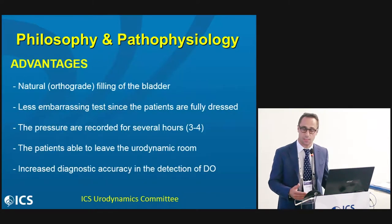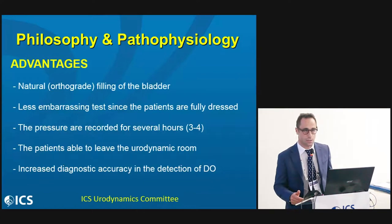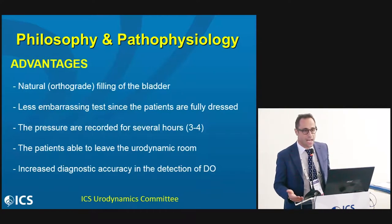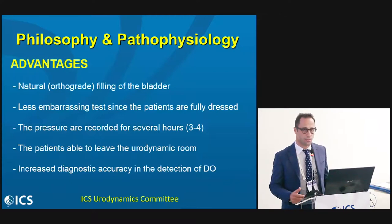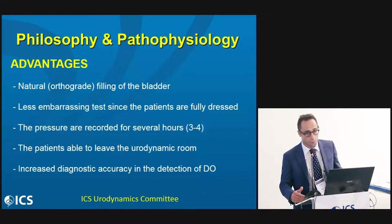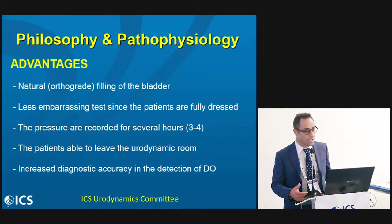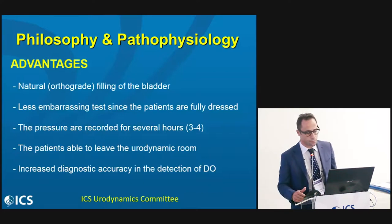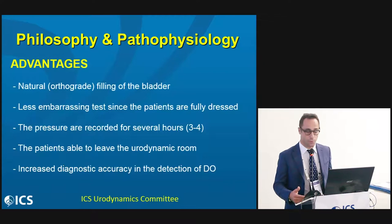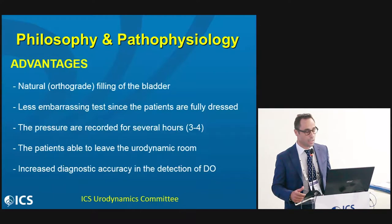AUM has some advantages as well as disadvantages. The advantages of ambulatory urodynamics are that it is a less invasive test compared to routine cystometry, because we don't fill the bladder with contrast medium or saline, but we fill the bladder naturally, asking the patient to drink. It is also a less embarrassing test, because the patient is fully dressed and free from the urodynamics room. The pressures are recorded for longer periods of time, therefore there is an increased diagnostic accuracy in the detection of detrusor overactivity.